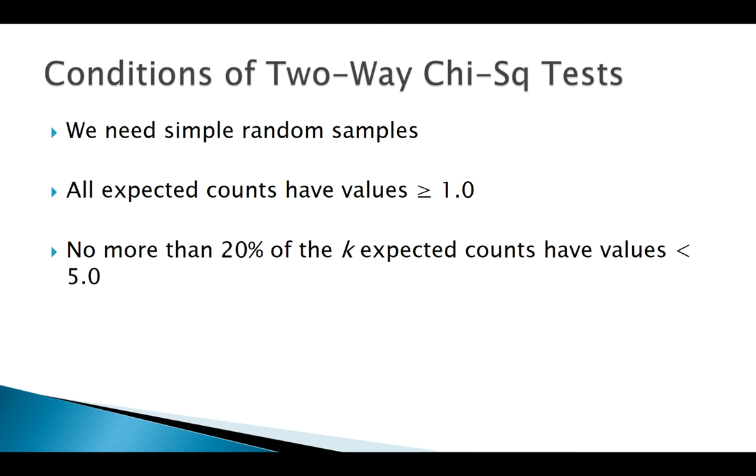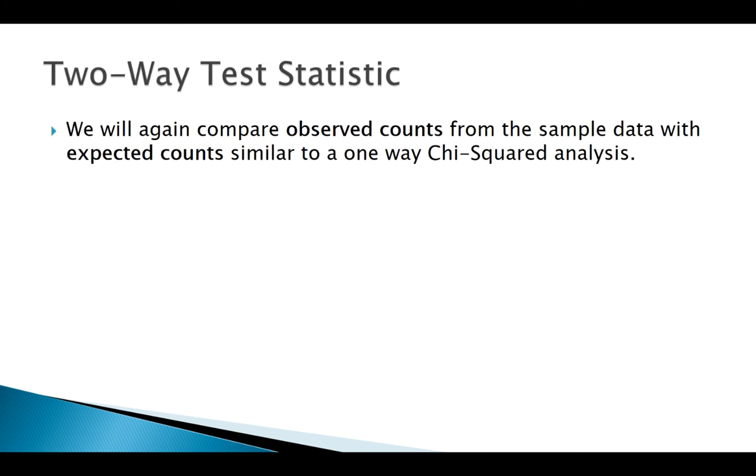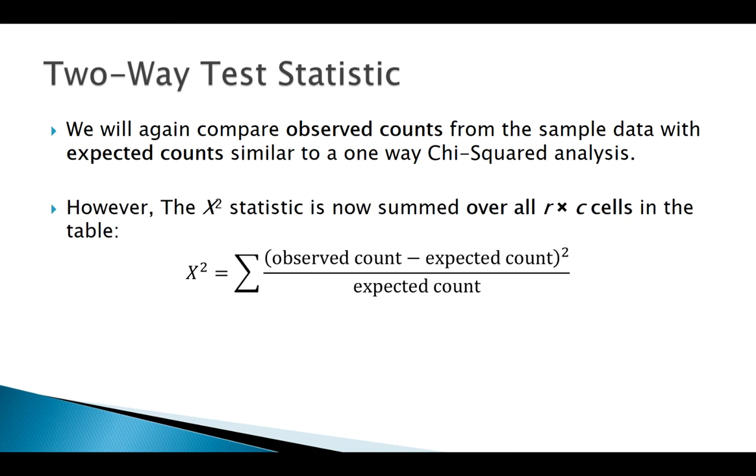Here's our test statistic. We find observed counts from the data and calculate the expected counts. The test statistic looks very similar to goodness of fit, except the difference is now we don't just have one row of cells to add up – we've got an entire table of R by C cells to sum up once we've calculated each cell's contribution.